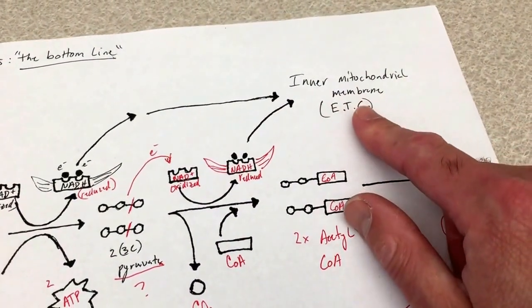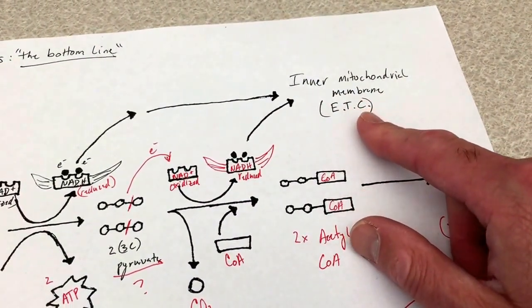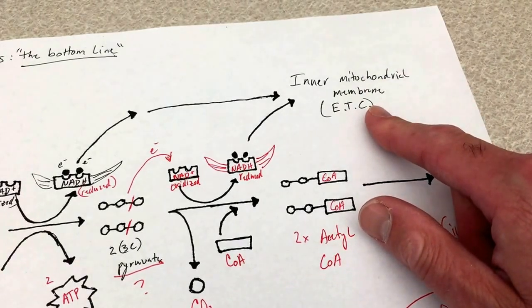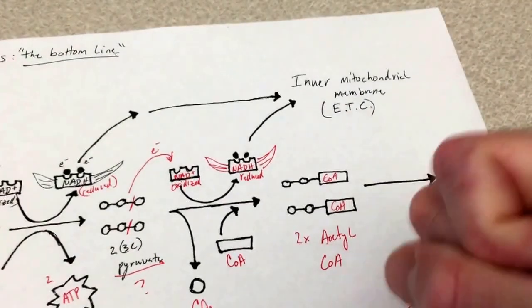This can fly off to the inner mitochondrial membrane where embedded membrane proteins participate in electron transport so that we can make a ton of ATP.